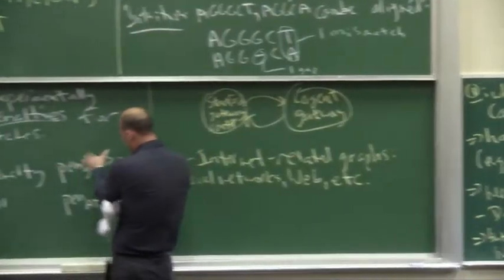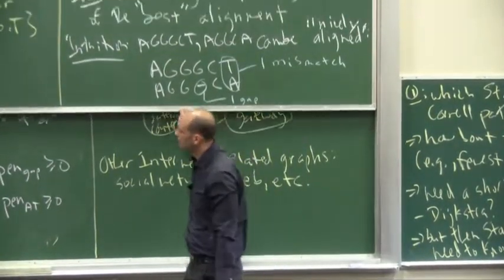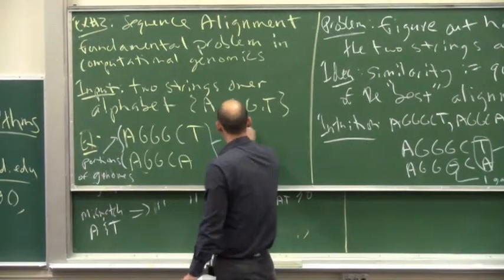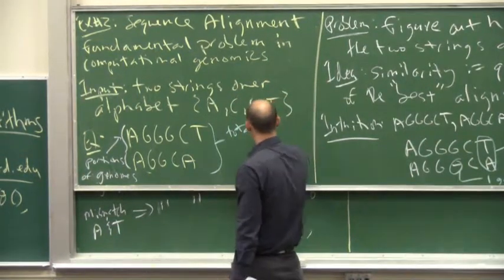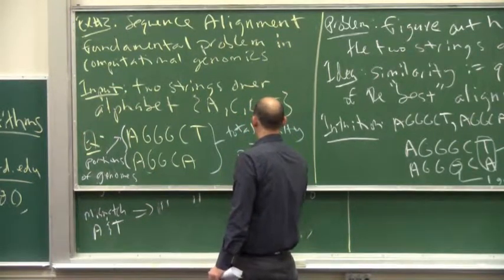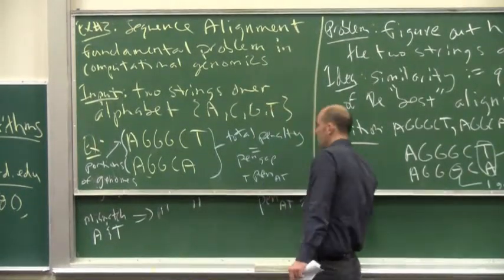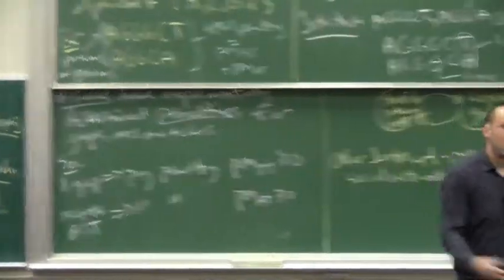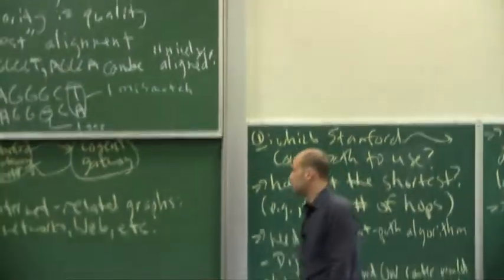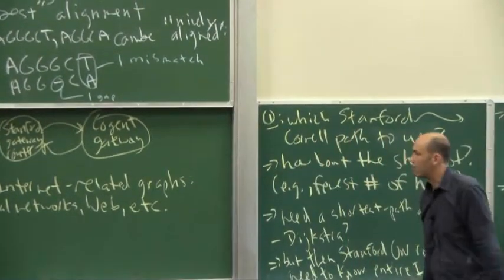Just for concreteness, think of this as five bucks and twelve bucks. Penalties add. So the total penalty for the running example would be seventeen dollars — or abstractly, whatever the penalty of a gap is, plus the penalty for mismatching A and T. In some applications all mismatches are exactly the same, maybe it always costs you twelve bucks. In other contexts some mismatches are worse, either for biological reasons or experimentally based on previous data. The algorithm we'll talk about eventually supports that.